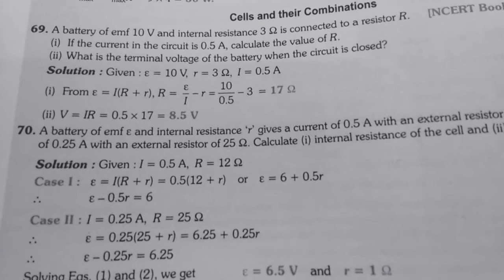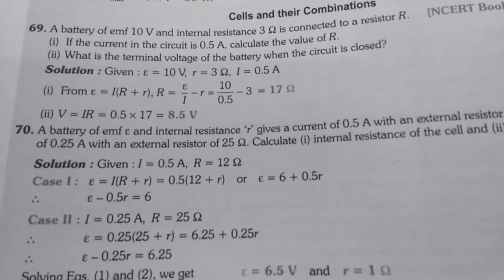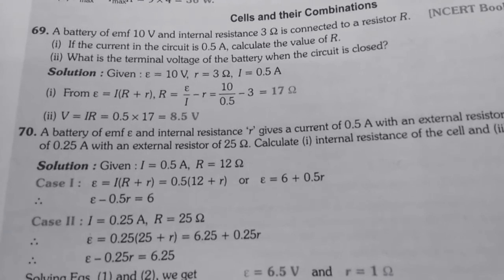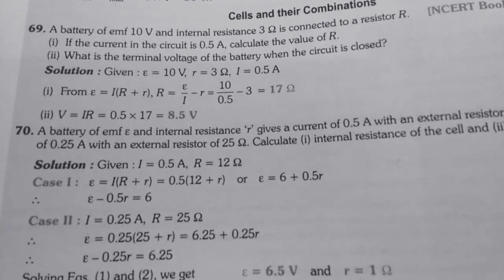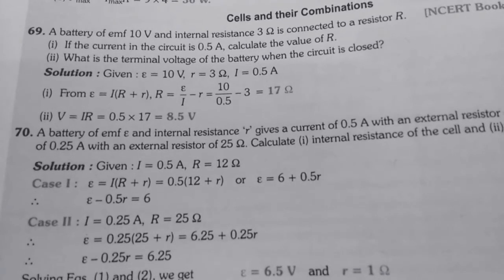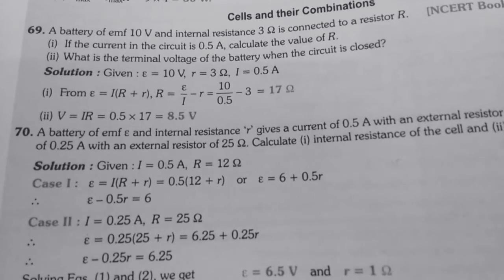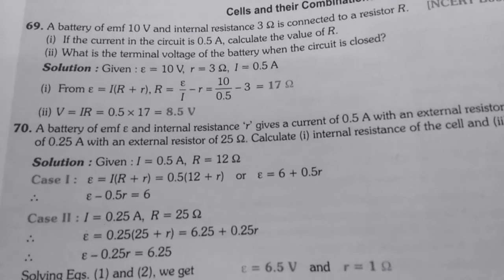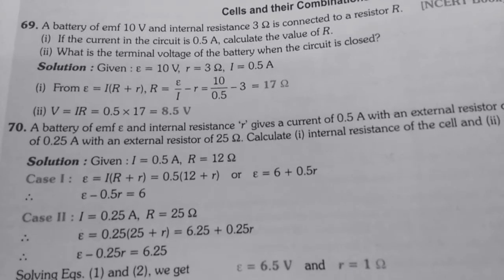Then we have to find out the terminal voltage. From Ohm's law, we know the formula of voltage V equals to IR. When we put the value of I and R, then we get 8.5V which is the terminal voltage for the given resistance.